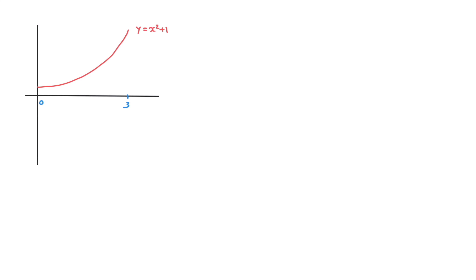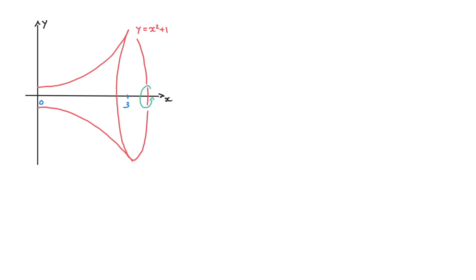Another way of saying that is that we're going to revolve this curve around the x-axis through 360 degrees. I should label these axes — that would be the x-axis and the y-axis. If we revolve this curve through 360 degrees around the x-axis, it would create a volume looking something like this. We can see we have a shape which looks a bit like a trumpet.